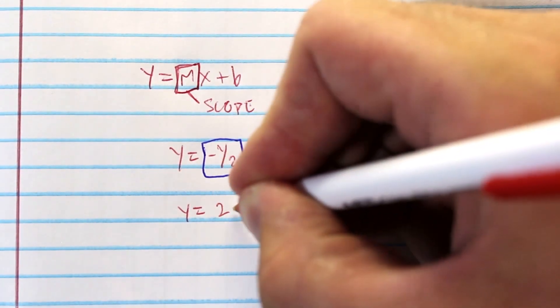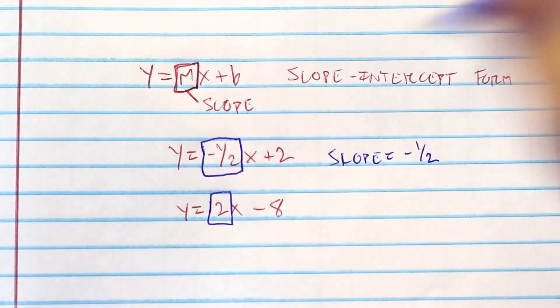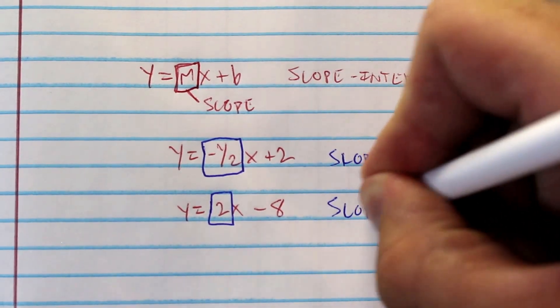If we look at another example, say you're given y equals 2x minus 8. Again, your slope is what's in the place of m. So here your slope is 2.